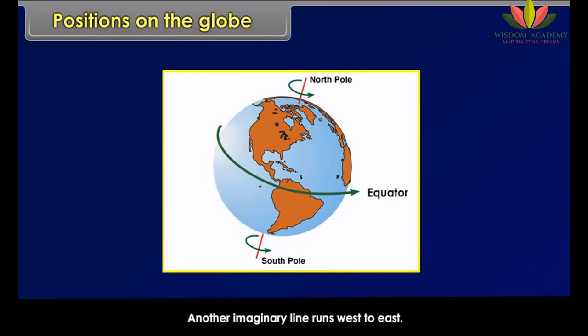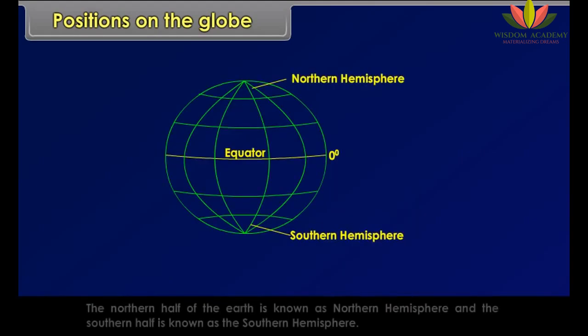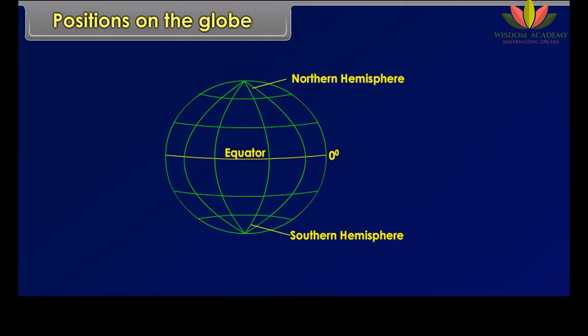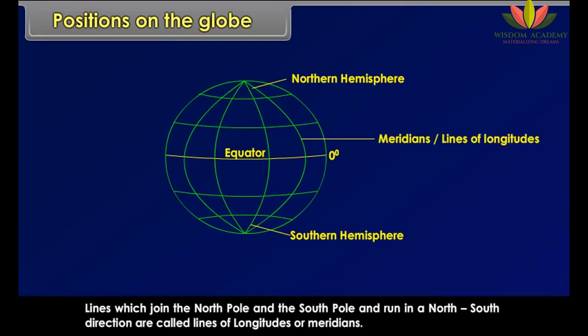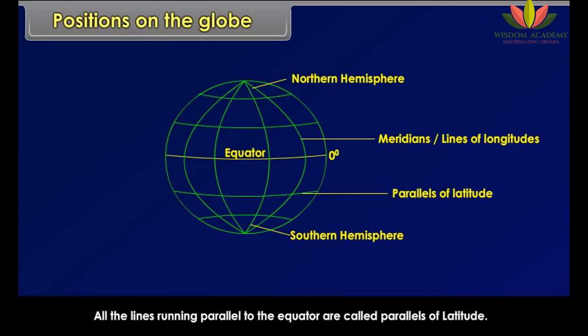Another imaginary line runs west to east and divides the earth into two equal parts. This imaginary line is known as the equator. The northern half of the earth is known as the Northern Hemisphere and the southern half is known as the Southern Hemisphere. Lines which join the North Pole and the South Pole and run in a north-south direction are called lines of longitudes or meridians. All the lines running parallel to the equator are called parallels of latitude.